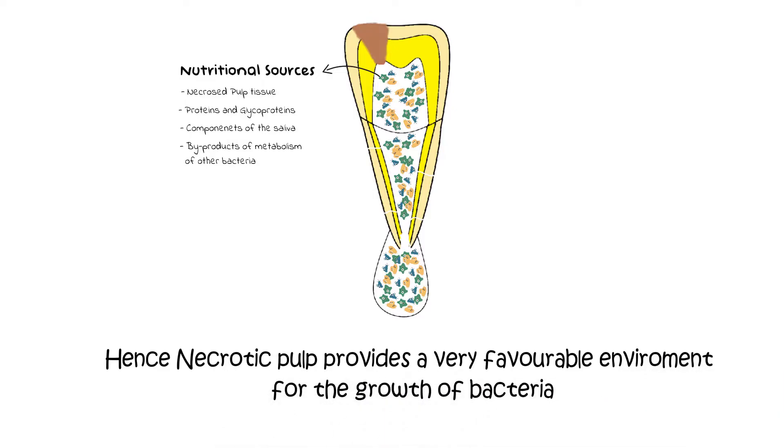In conclusion, all of these factors make the necrotic pulp a very fertile area for bacterial growth, and hence bacterial division and infection inside the necrotic pulp becomes very easy once the pulp has undergone necrosis.